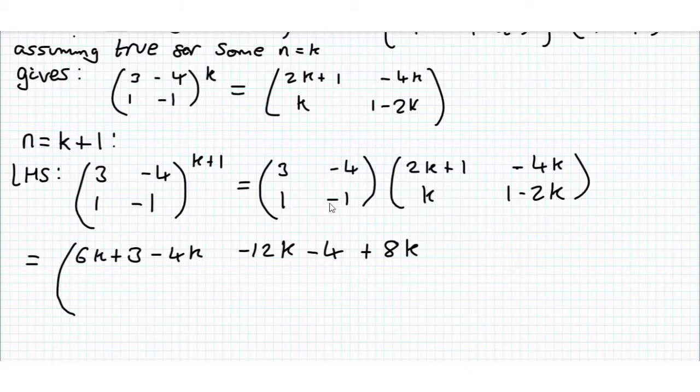Now we go along this bottom row, down this first column. So that's going to be 2k+1 minus k. And then we go along the bottom here and down this one here. So this one is -4k minus 1 plus 2k.